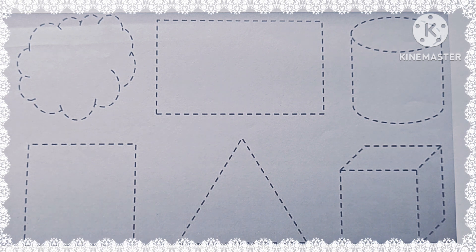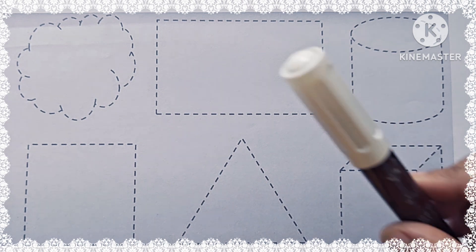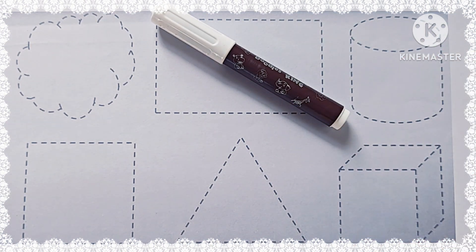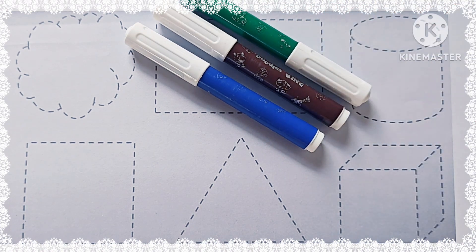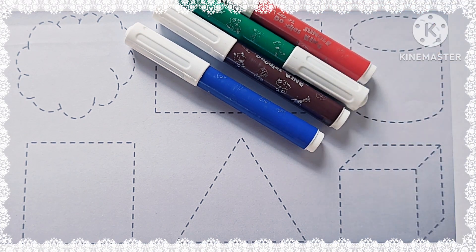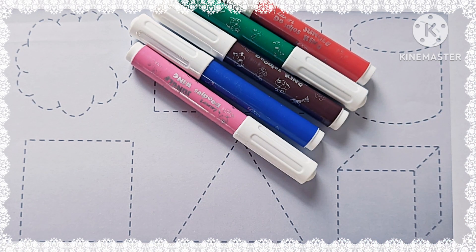Learn about the colors: it is brown color, dark blue color, dark green color, red color, pink color.